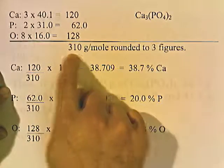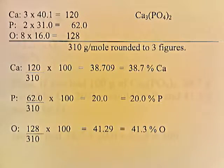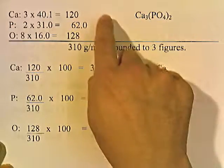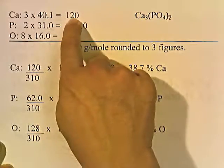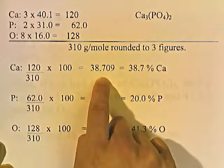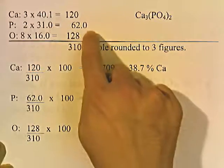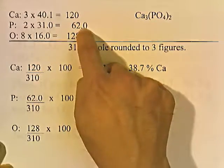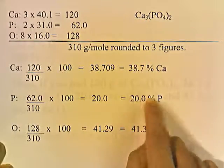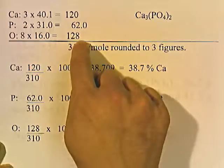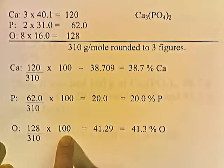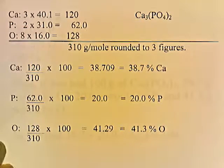One mole of calcium phosphate weighs 310 grams, rounded to three significant figures. Now we take the individual masses and divide them by 310. In one mole of calcium phosphate, there are 120 grams of calcium: 120 divided by 310 times 100 gives 38.7%. Phosphorus: 62 grams of phosphorus — 62 divided by 310 times 100 gives 20%. Oxygen: 128 grams — 128 divided by 310 times 100 gives approximately 41.3%. And that's our answer.